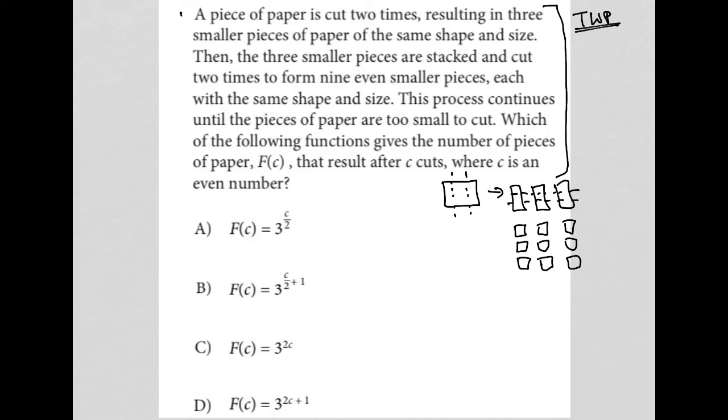Same shape and size. This process continues until the pieces of paper are too small to cut. So it continues, meaning I would cut this into three pieces or two times and that would make it three. And all of these would turn, each of these squares or rectangles, whatever they are at this point, would be multiplied by three.